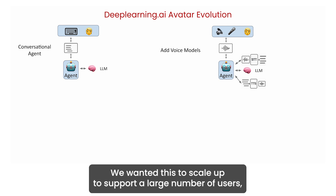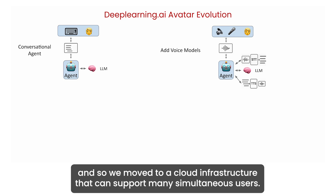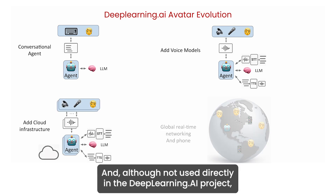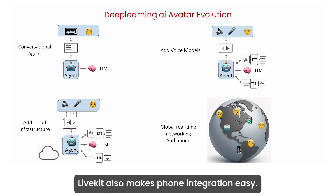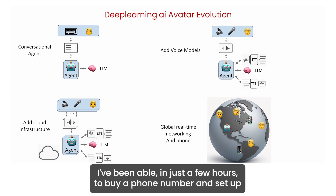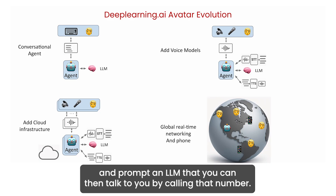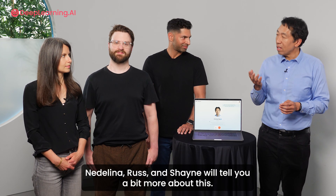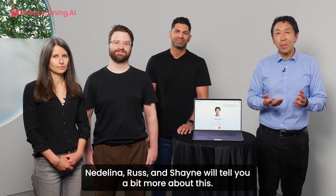We wanted this to scale up to support a large number of users, so we moved to a cloud infrastructure that can support many simultaneous users. And although not used directly in the DeepLearning.ai project, LiveKit also makes phone integration easy. In some of my other projects, I've been able in just a few hours to buy a phone number and set up and prompt an LLM that you can then talk to by calling that number. LiveKit provides communication infrastructure for all of these voice-based workflows.